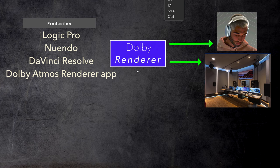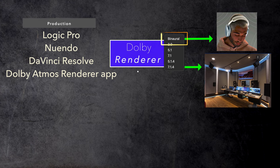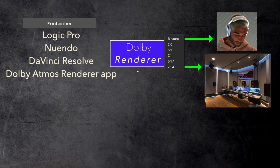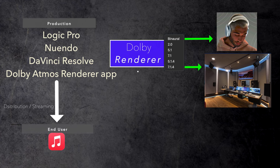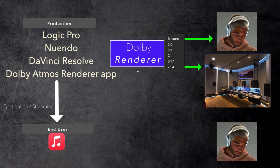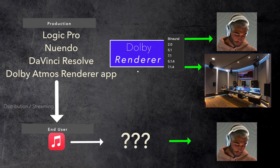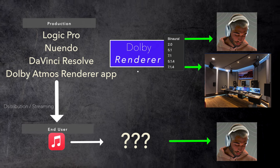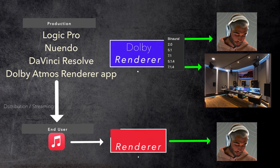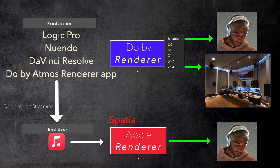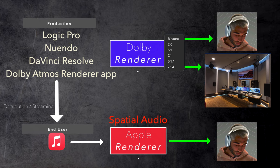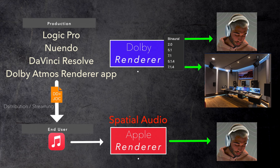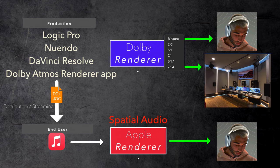So in Logic 10.7.2, when you selected binaural in the monitoring format, Logic used Dolby's version of the binaural renderer. But once that song gets uploaded to Apple Music and the end user listens over headphones, Apple is not using the Dolby Atmos renderer — instead, Apple uses their own renderer, their own virtualization algorithm, also referred to as spatial audio, to convert the Dolby Atmos mix to a binaural headphone mix. There are also other challenges, such as the Dolby codec Apple uses, called the DD Plus codec, that ignores all the binaural render modes set in your mix for each track.